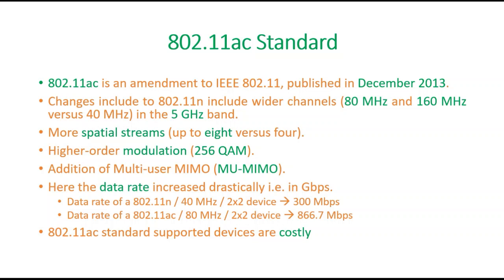Coming to the 802.11ac standard: 802.11ac is an amendment to the IEEE 802.11 standard. Looking at the highlights of this standard, they added wider channels — 80 MHz and 160 MHz — already it was up to 40 MHz — which works in the 5 GHz band. More spatial streams, up to 8 versus 4 in 11n, a higher modulation scheme of 256-QAM, and the addition of Multi-User MIMO, that is MU-MIMO, where earlier it was single-user MIMO.